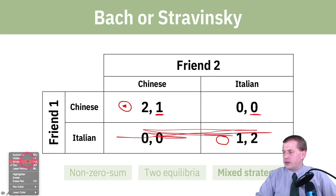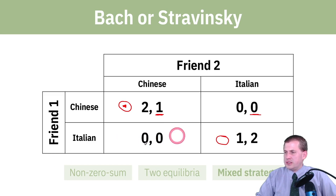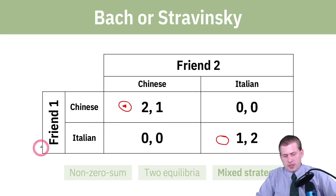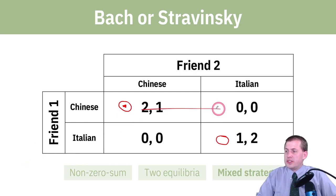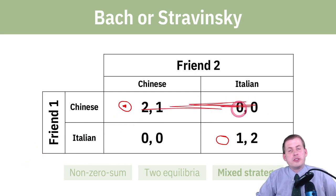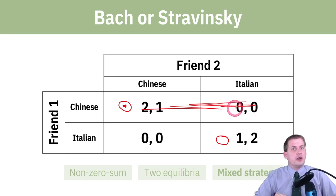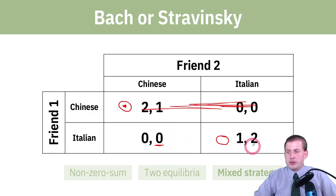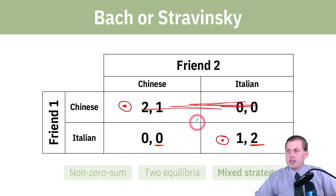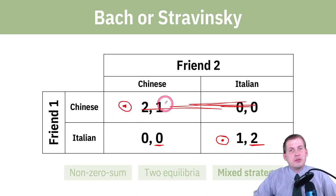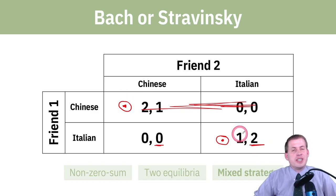Now cover up the first row and assume that friend one is definitely going to the Italian restaurant. Where should friend two go? You could get zero utils by going to Chinese, or two utils by going to Italian, so you should go to Italian. What you end up with is two Nash equilibria: both friends going to the Chinese restaurant, and both friends going to the Italian restaurant.